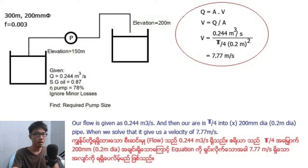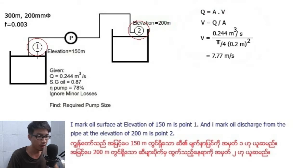Our area is pi over 4 times 200 millimeter diameter pipe. This gives us a velocity of 7.77 meters per second. The water surface at elevation of 150 meter is Point 1, and the discharge from the pipe at the elevation of 200 meter is Point 2.